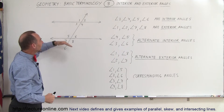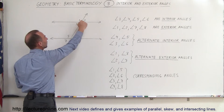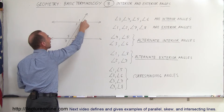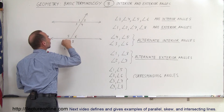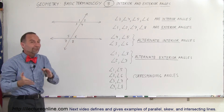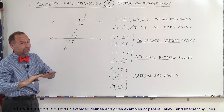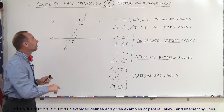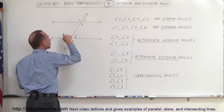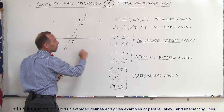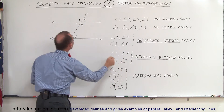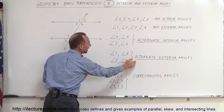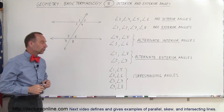And then if we look at the outside angles — again, if these lines are parallel, notice that angle 1 and angle 8 will be the same, and angle 2 and angle 7 will be the same. Only if those lines are parallel; if they're not parallel, then they're not the same or congruent. But irregardless, angles 2 and 7 are called alternate exterior angles, and angle 1 and angle 8 are considered alternate exterior angles.